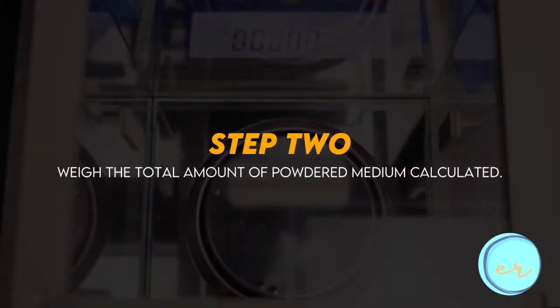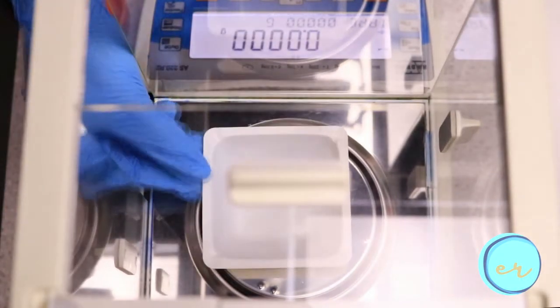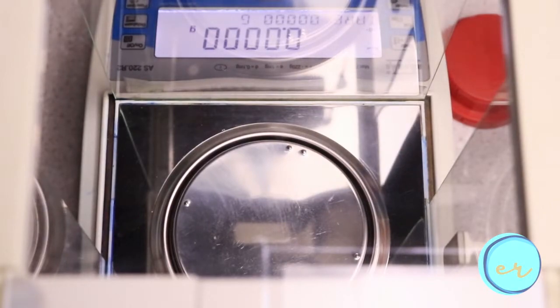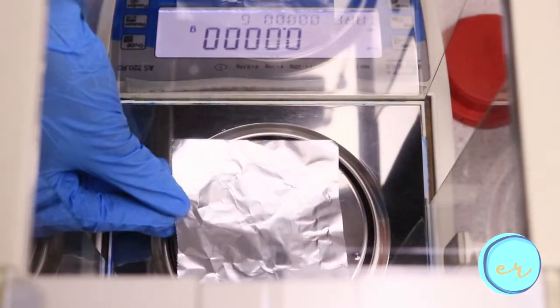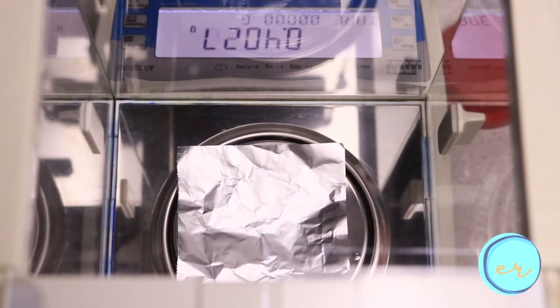Next, we are going to weigh the powdered medium. In most laboratories, we usually use a weighing box made of light material like plastic. If none is available, cut out a piece of wax paper, weighing paper, or aluminum foil large enough to hold the amount of powdered medium needed.